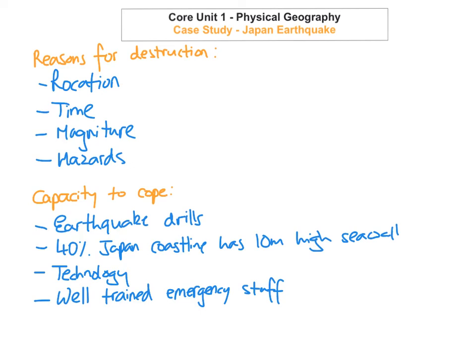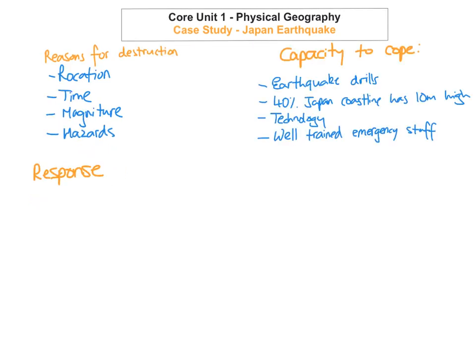We're going to look at their response to when they suffered this huge earthquake, which led to the tsunami and then the nuclear power plants at Fukushima exploding. They actually gave a really good warning — some people had up to 20 minutes of warning before the tsunami hit, from the Japan Meteorological Agency. This saved many thousands of people, as they were able to get to higher ground and move out of coastal areas, showing a great response to this natural disaster.